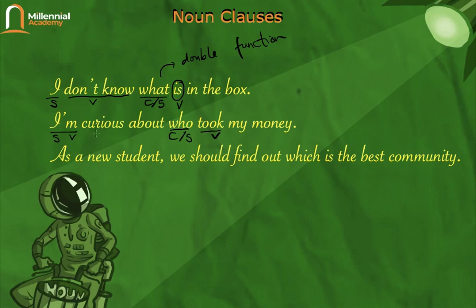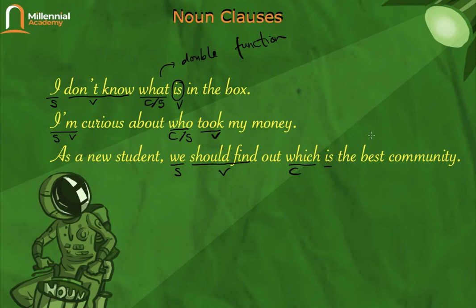'As a new student' is not subject or verb — it's just a prepositional phrase. 'We should find' is subject and verb. The noun clause is: 'which is the best community.' Here a verb appears right after the connector, but the subject is not missing — the subject is 'which.' So 'which' is serving both as a connector and as a subject.